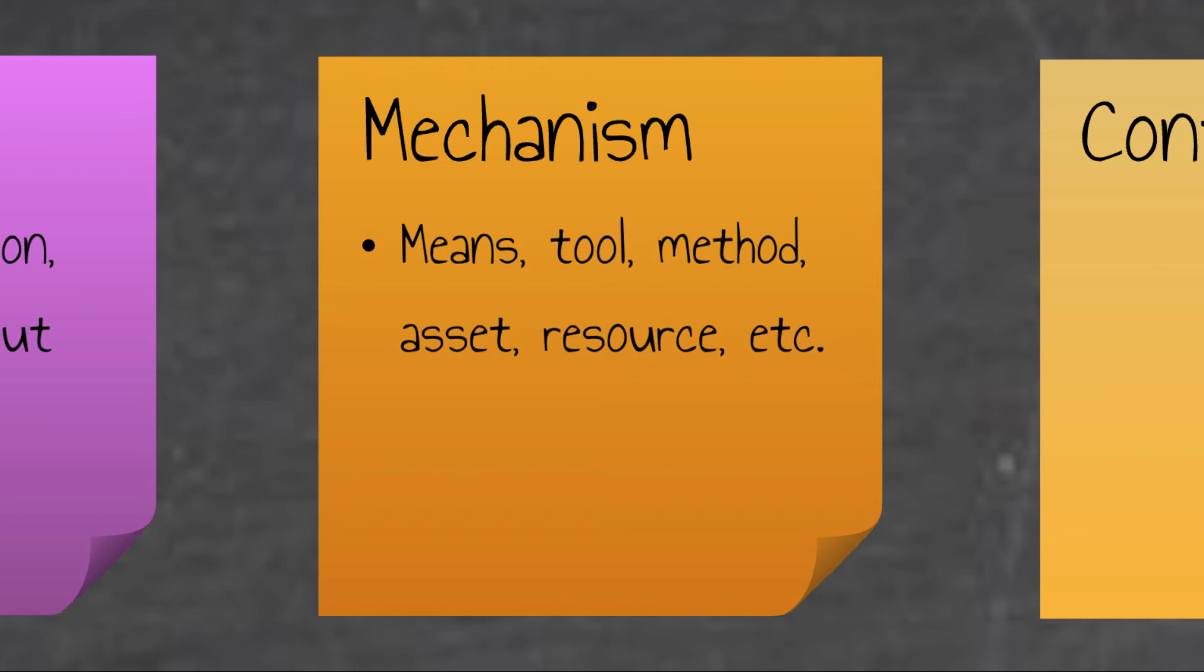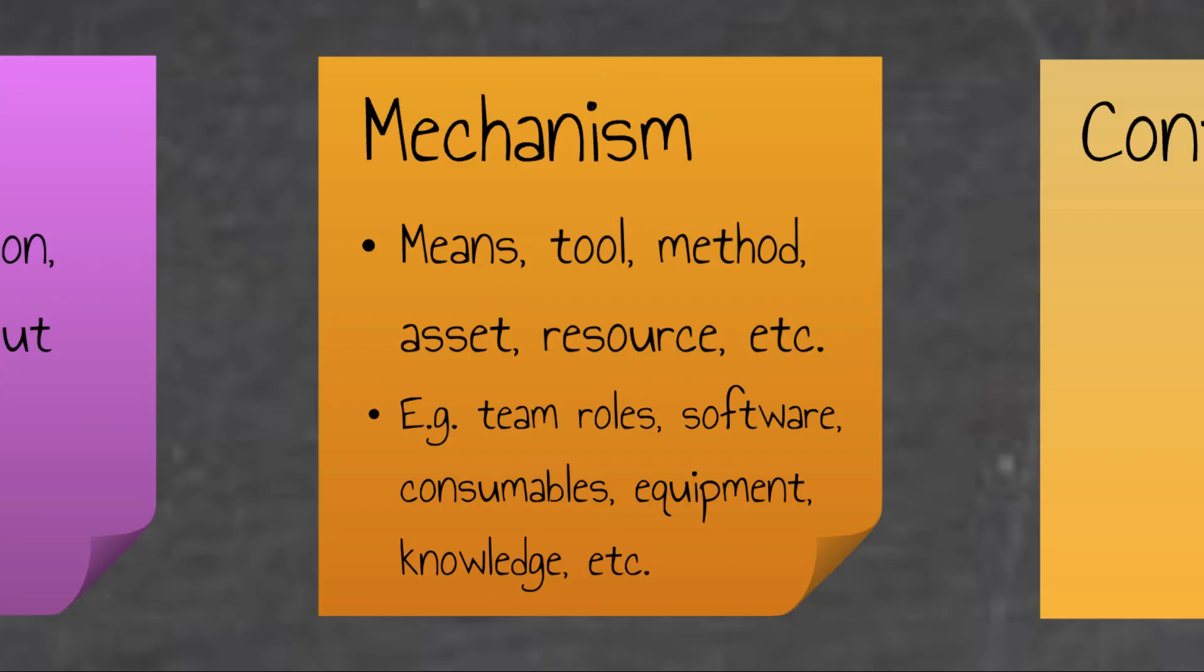Examples of mechanisms are team roles, specific software tools and systems, consumables, equipment, and so on. Occasionally, mechanisms may also be intangible things like knowledge of how to achieve a function. I've also come across modelers who treat knowledge as input, and that's fine, but from personal experience, I tend to consider knowledge as a mechanism. And when you think about it, knowledge is an asset that is acquired over time and reused to address problems, whereas data and information are things that flow much more easily and readily act as inputs and outputs.